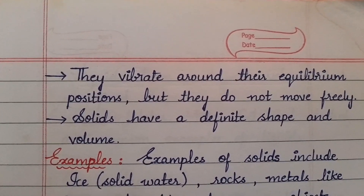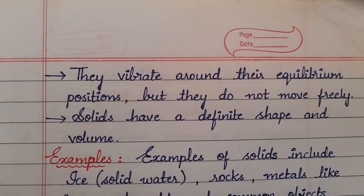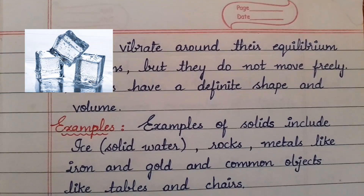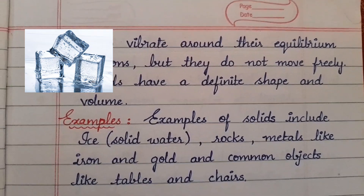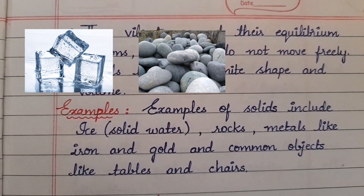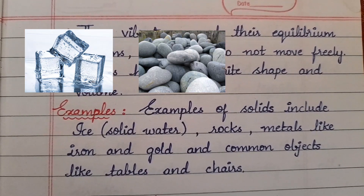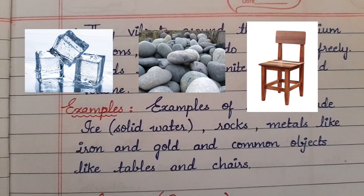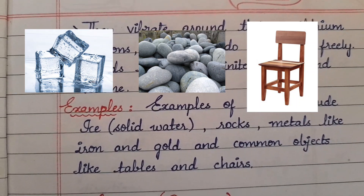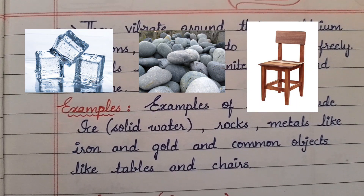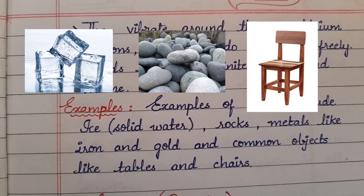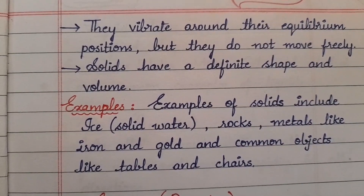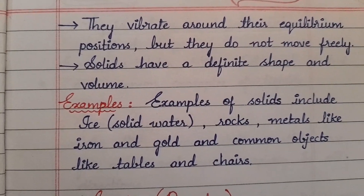Some examples of solids include ice, solid water, steel, rocks, metals like iron and gold, and common objects like tables and chairs. All objects which are in a solid state come under these examples.